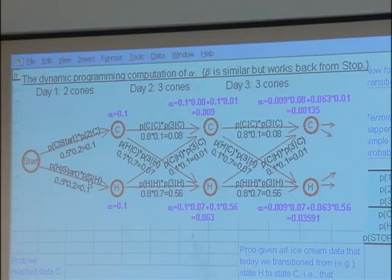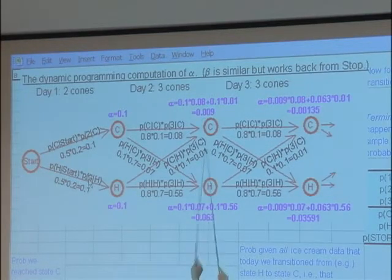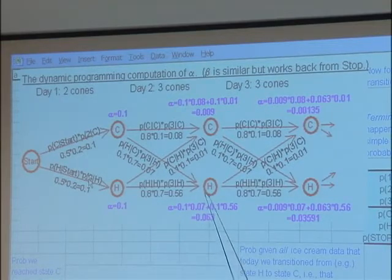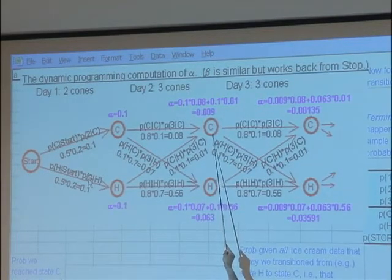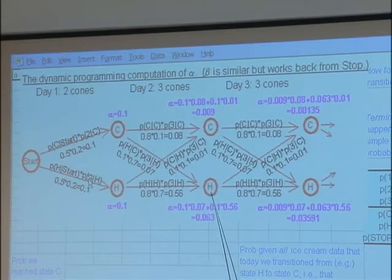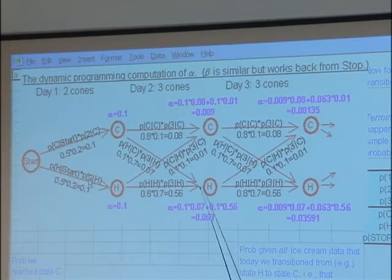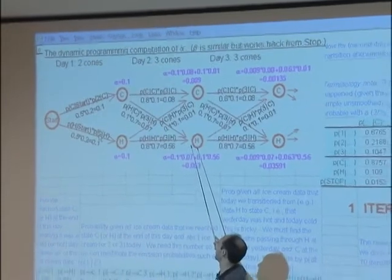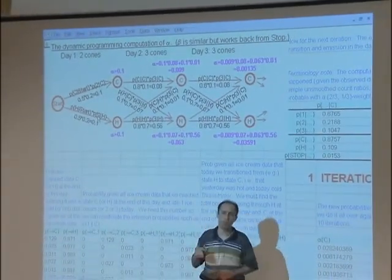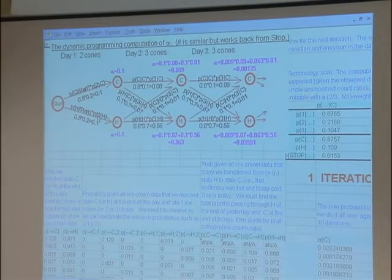The total probability of these paths is only the probability that I ate that set of ice creams. But given that I ate that set, we're interested in which path was the best way of explaining it — that happens to be hot, hot, hot. If we want to know whether the second day was hot, we look at the total probability of all paths going through the hot state there — which will be very small because each explains the entire diary with the additional requirement that the second day be hot — and compare it to the total probability of paths going through the cold state. Maybe the hot paths are 100 times greater in total probability than the cold paths, so the probability of the second day being hot would be 100 times as great as it being cold.